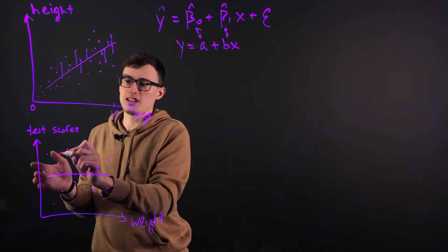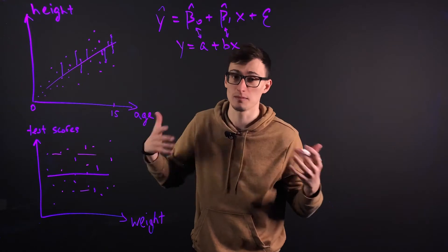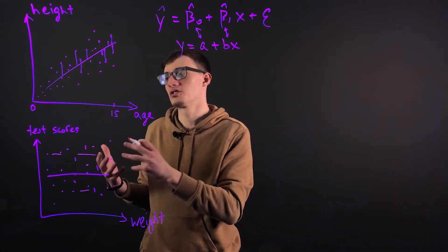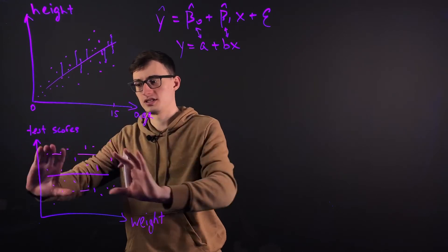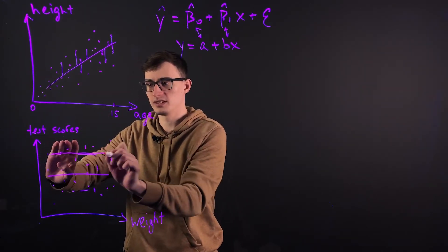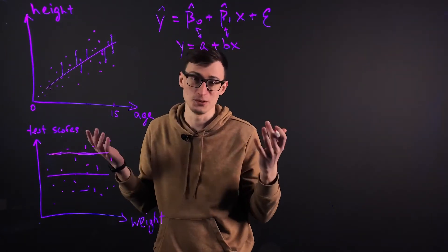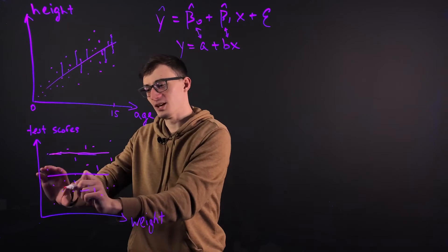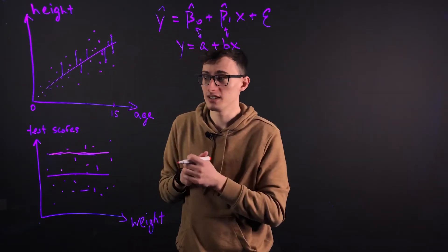But it doesn't necessarily have to be through the center. It could be somewhere up here or somewhere down here. It really depends on the population sample that we take. I mean, if we take a bunch of really smart kids, obviously, this would all be shifted up. Because their test scores would be higher and therefore the line, the best fit line would go up higher. Likewise, if we take a bunch of F students or C students, that line would be down below because their test scores would be shifted. This makes sense.